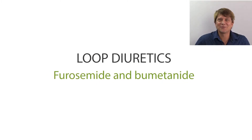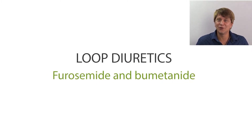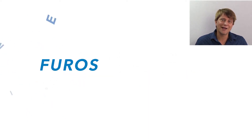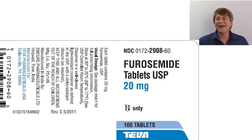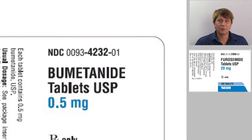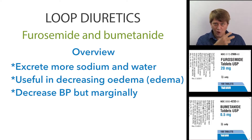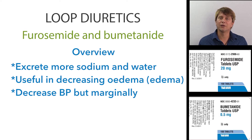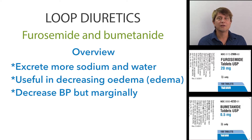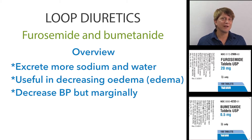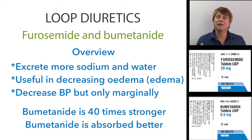Furosemide and Bumetanide are both loop diuretics. The loop diuretics excrete more sodium and along with the sodium excretion the water follows. They are primarily used for decreasing edematous conditions, for instance congestive heart failure, liver failure, and pulmonary edema. They are effective in reducing blood pressure but only marginally in comparison to placebo according to the latest reviews.